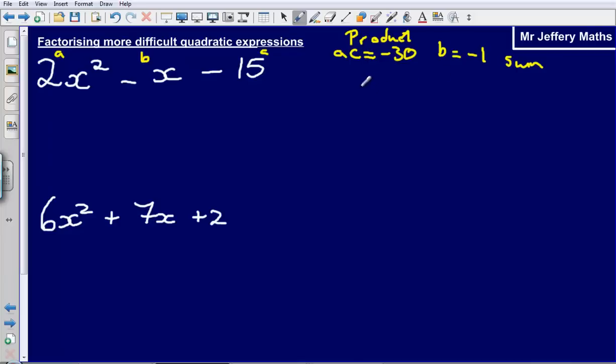Those two numbers here are going to be minus 6 and plus 5. So just quickly check that, minus 6 times by plus 5 gives me minus 30. And then when we sum this together, minus 6 plus 5, that gives me minus 1.